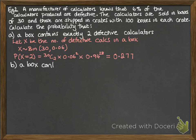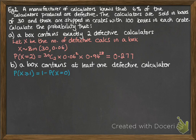Next we are looking at a box contains at least one defective calculator. So same distribution but this time we're looking at the probability that x is greater than or equal to one, which is easiest found by doing one minus the probability that x equals zero. So we'll carry on with that and there's our probability.